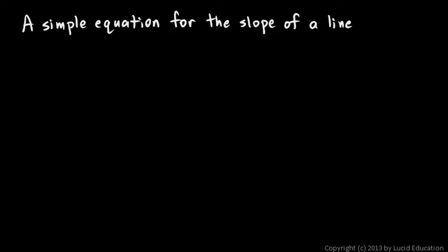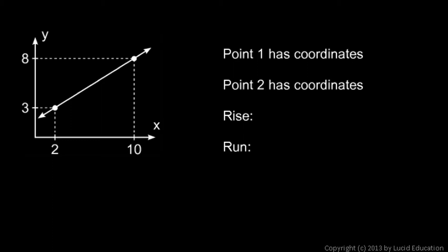Now we will talk about a simple equation for the slope of a line. Take a look at this example. Here are two points marked on a line. This is point 1 and this is point 2.